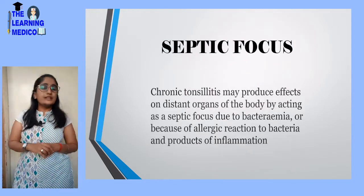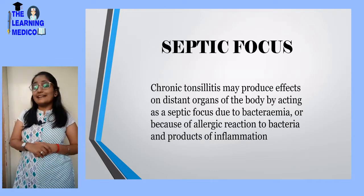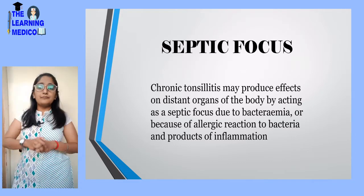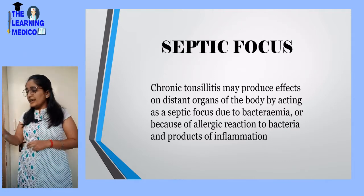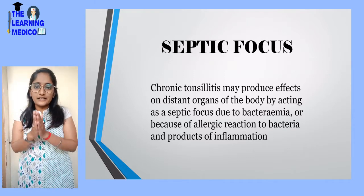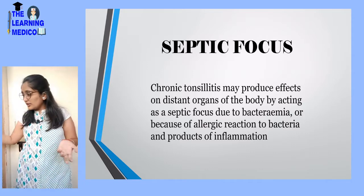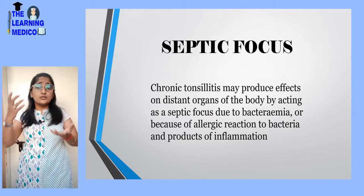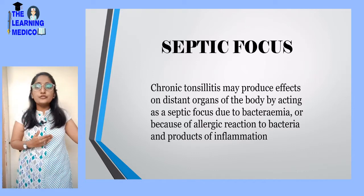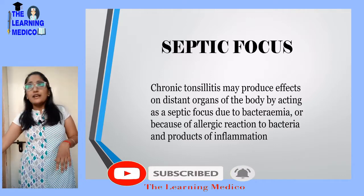Next is the septic focus. Chronic tonsillitis produces effects on distinct organs of the body by acting as a septic focus — due to bacteremia or because of allergic reactions to bacteria and products of inflammation. The tonsil acts as a source from which organisms can spread to other parts, causing conditions such as acute pharyngitis and acute otitis media.